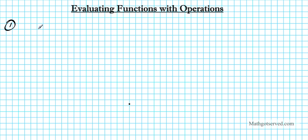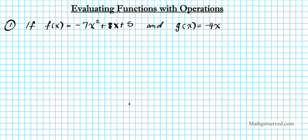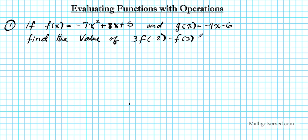Let's go ahead and write down the first example. For question one, if the function f of x is negative 7x squared plus 8x plus 5, and g of x is negative 4x minus 6, find the value of 3 times f of negative 2 minus f of 3 times g of negative 4.